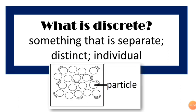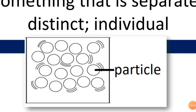Why is discrete? Something that is separated, distinct and individual. As you can see here, this is the particle, individually distinct and separated.